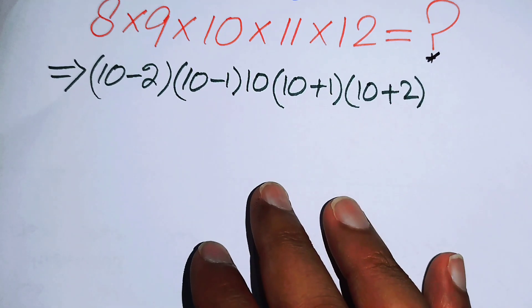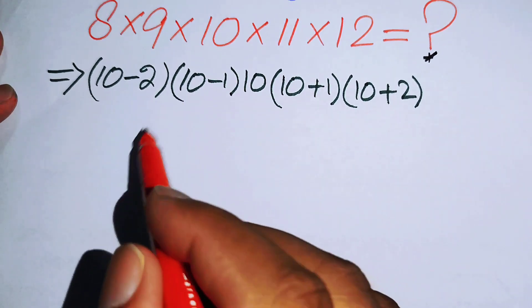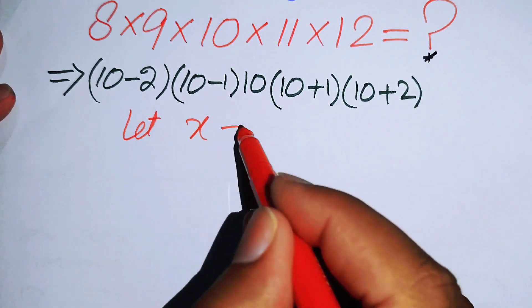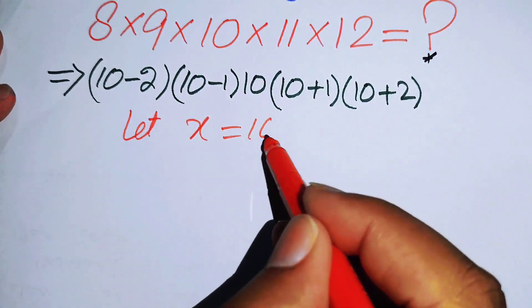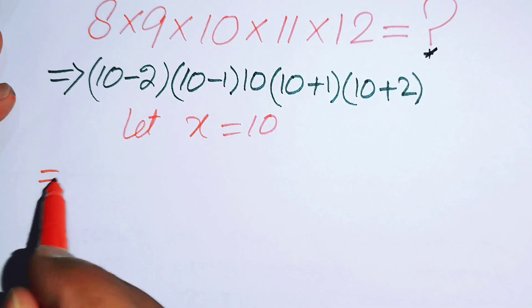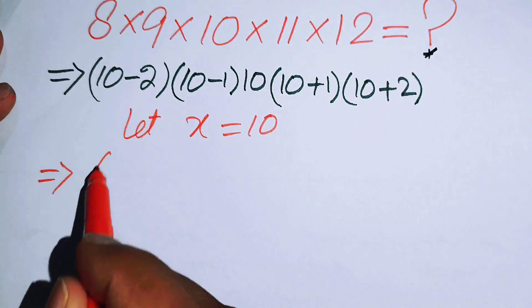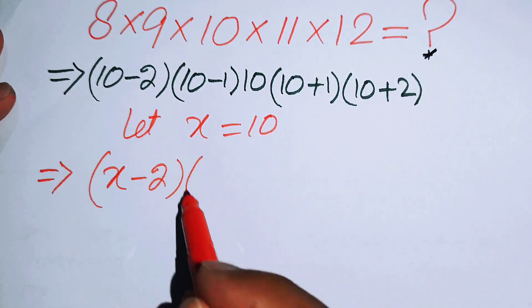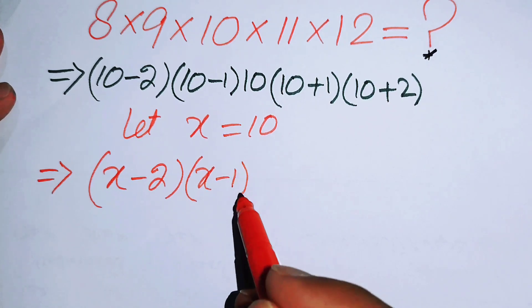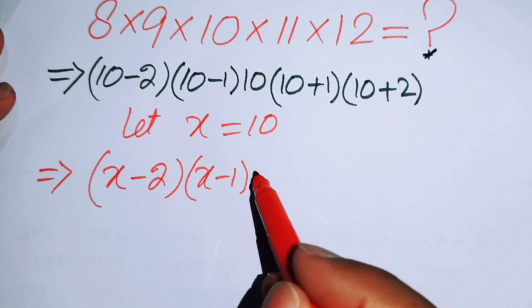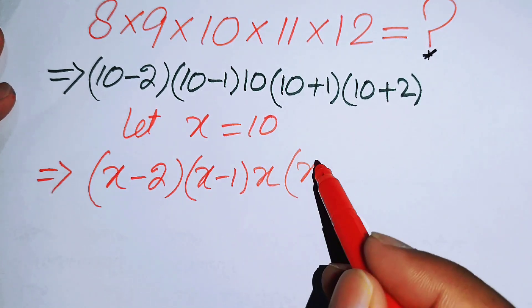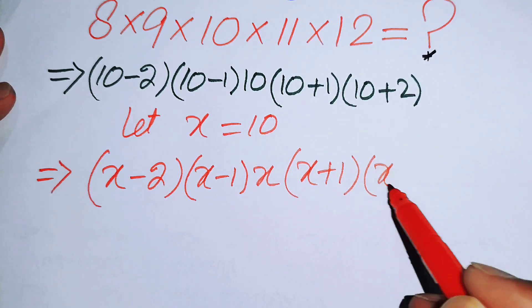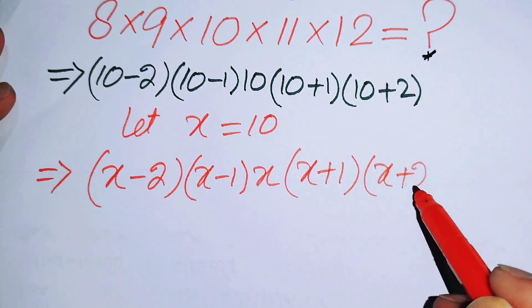Now let X equal 10. Then this expression becomes (X minus 2)(X minus 1)(X)(X plus 1)(X plus 2).